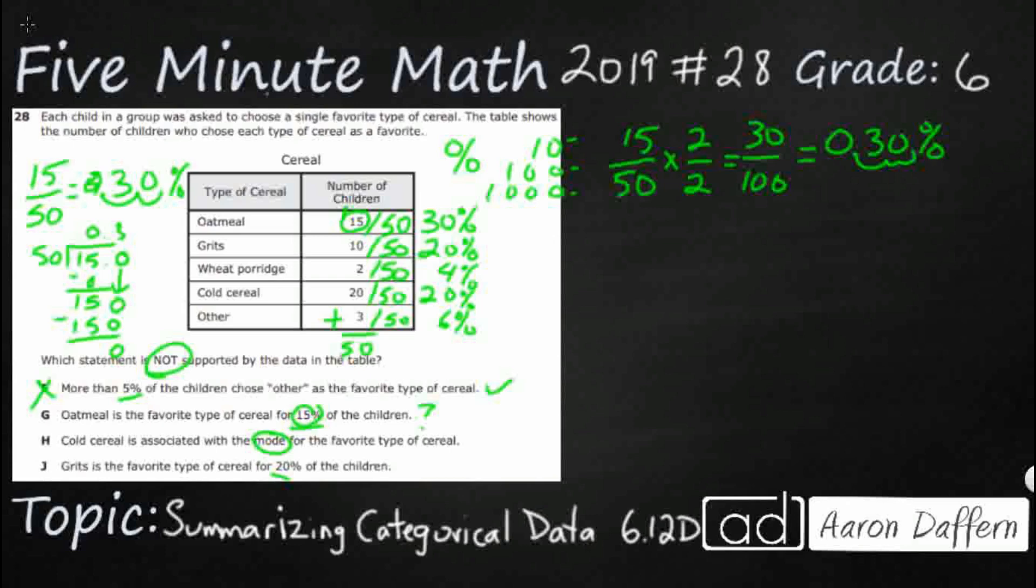Cold cereal is associated with the mode for the favorite type. So cold cereal is associated with the mode. So that is the favorite. Well, is it the most selected?